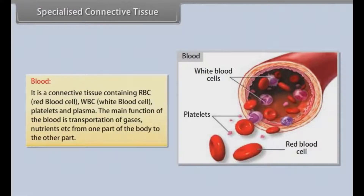Blood is a connective tissue containing red blood cells (RBC), white blood cells (WBC), platelets, and plasma. The main function of blood is the transportation of gases, nutrients, etc., from one part of the body to another.